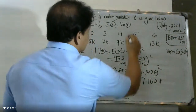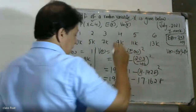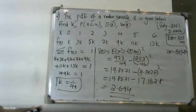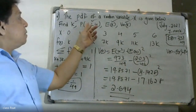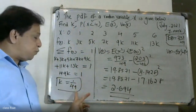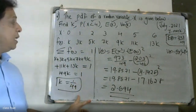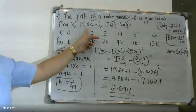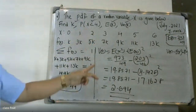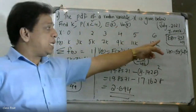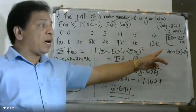The variance of x is 2.694. To summarize: k equals 1/49, P(x less than 4) is 40/49, expectation of x and variance of x equal 2.694.